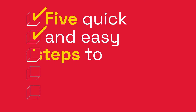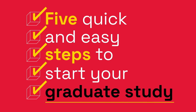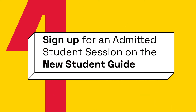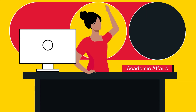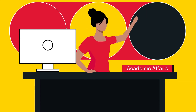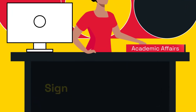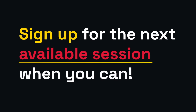Let's go over five quick and easy steps to start your graduate study. Step 1: Sign up for an admitted student session on the New Student Guide. Admitted student sessions occur each week with an Academic Affairs team member. Sign up for the next available session when you can.